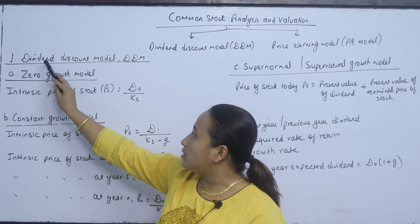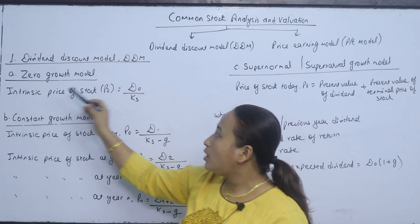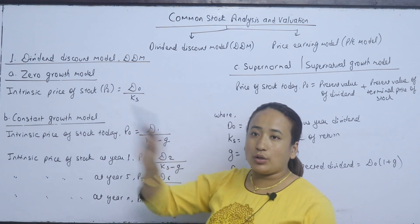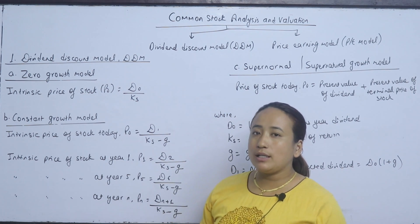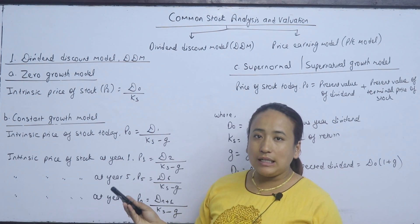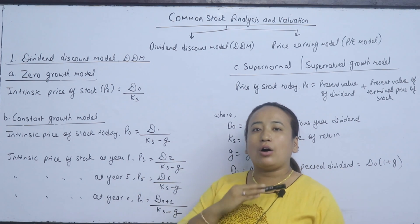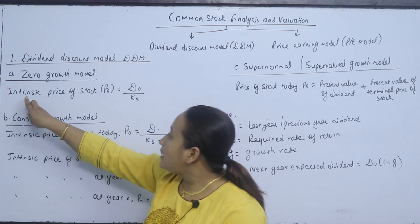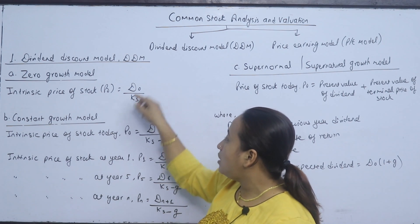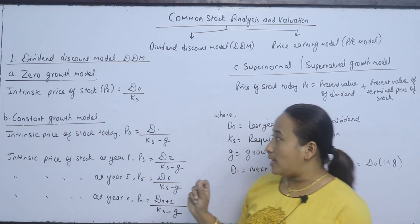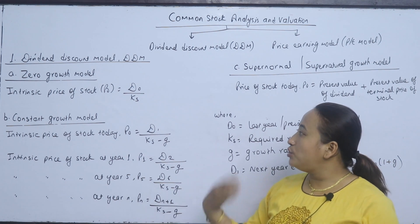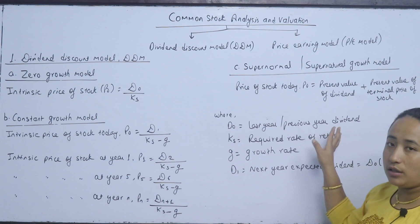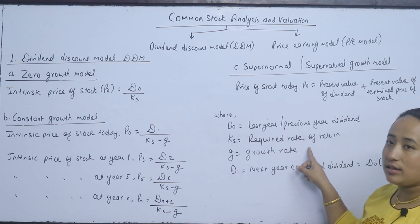The Dividend Discount Model's first type is the Zero Growth Model. Zero growth means the dividend is expected to remain constant — D0, D1, D2 are all the same constant value. The intrinsic price of stock P0 equals D0 divided by KS, where D0 is the previous year's dividend and KS is the required rate of return.